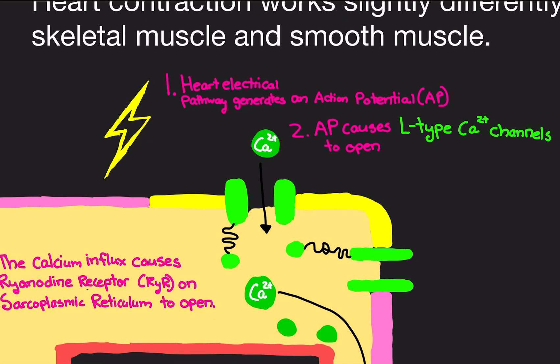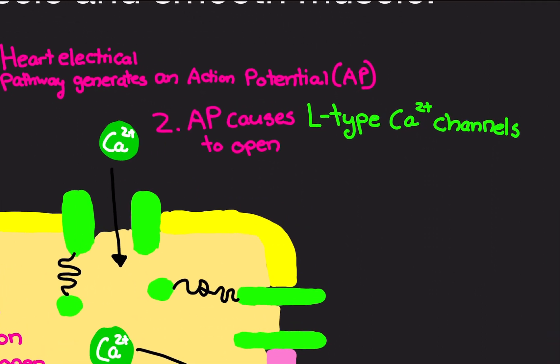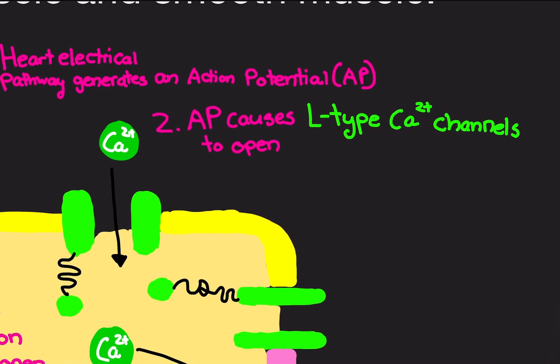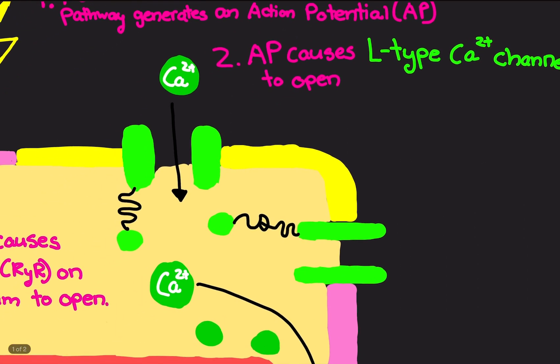The heart electrical pathway generates an action potential, and now it has reached the muscle cell of the heart. Any muscle cell in the heart just received it. This will cause something called L-type calcium channels to open. They are called L-type calcium channels—I do not know why it's L-type, they just named it like that. Physiology just has to be difficult like that. So calcium rushes into the muscle cell.